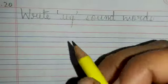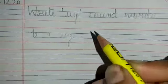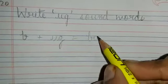The first word is bug. So we write down B plus UG UG. What word will be formed? Bug.